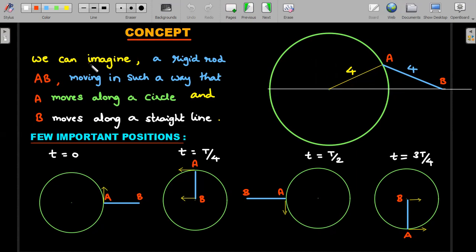That's what I've written - we can imagine a rigid rod AB moving in such a way that A, which is the end of the rod, moves in a circle like this with a constant angular velocity, and B moves along the straight line. This AB's length cannot be changed. So whatever he has mentioned, we are visually thinking that they are actually connected by a rod which cannot extend its length.